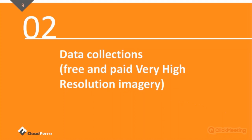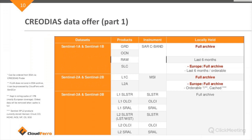Now Klaudia will tell you about our data collections. So, data collections which you can find on the CreoDias platform — we have really plenty of data you can use. CreoDias was developed under the Copernicus scientific program, so most of the data available comes from the Copernicus program, specifically the Sentinel mission. These data are available for free — they are open and everyone can make use of them.